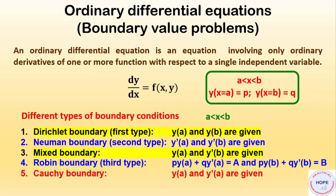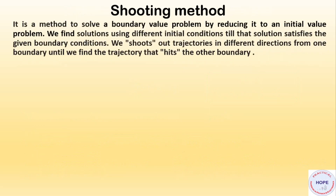These are the different types of boundary conditions we are going to consider: Dirichlet and mixed boundary. The shooting method is a method to solve a boundary value problem by reducing it to an initial value problem. We find solutions using different initial conditions until that solution satisfies the given boundary conditions.